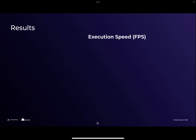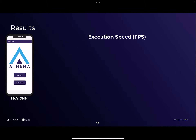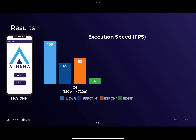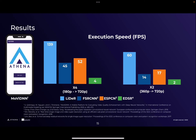First, let's check the execution speed of the networks using our demo application called MobileDNN. For X4 upscaling — taking 180p input to 720p output — we can see that LiDAR runs at around 140fps. Both FSRCNN and ESPCN manage to run in real-time above 30fps, but EDSR runs very slowly. However, when we move to X2 upscaling, only LiDAR can manage to run in real-time, while the other networks struggle to maintain that performance.